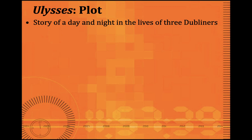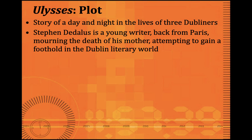The plot of Ulysses is set in one day and night in the lives of three Dubliners. It deals with the story of Stephen Daedalus — a young writer, back from Paris, an ex-Catholic who has given up his Catholicism, and an unsuccessful writer.